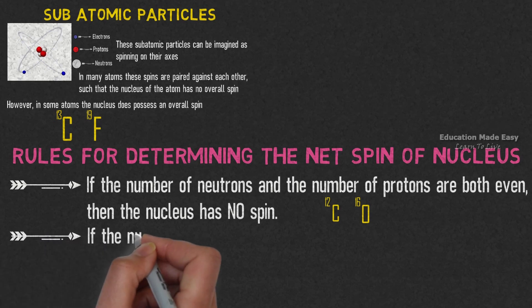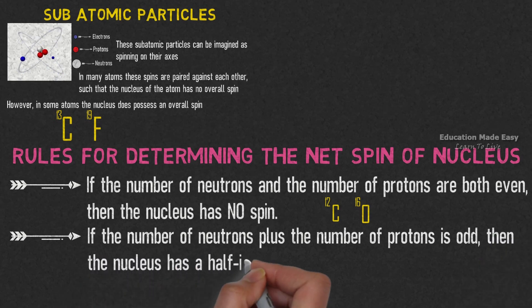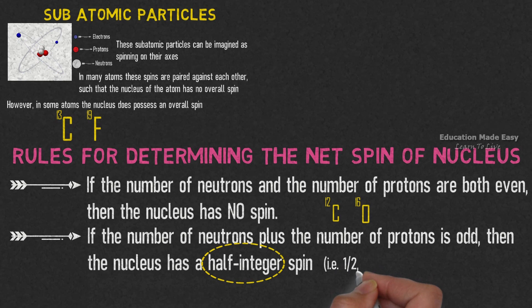Rule number 2: If the number of neutrons plus the number of protons is odd, then the nucleus has a half-integer spin. Half-integer means 1 by 2, 3 by 2, 5 by 2, etc.